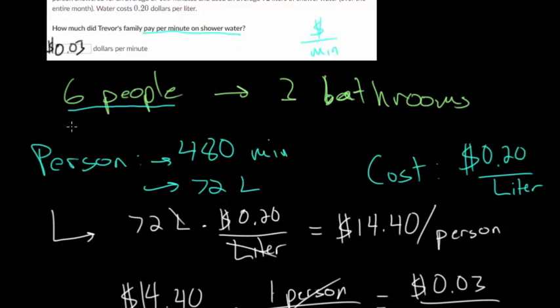We can ignore the fact that there are six people. I know the question is asking for how much did Trevor's family spend, and if they were asking for total dollars, then we would take this $14.40 and multiply it by six and you get something like $86 for the month. However, it's asking for a rate, dollars per minute. Each family member, regardless of who's in the shower, it costs 3 cents for every minute they're in there. If we wanted to know the total cost, we could multiply it by 480 minutes and then multiply it by six people. But since we're just looking for that rate, and we know the rate is the same for each person, that rate is $0.03 per minute or 3 cents per minute.